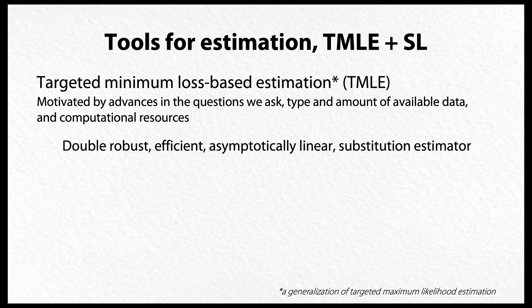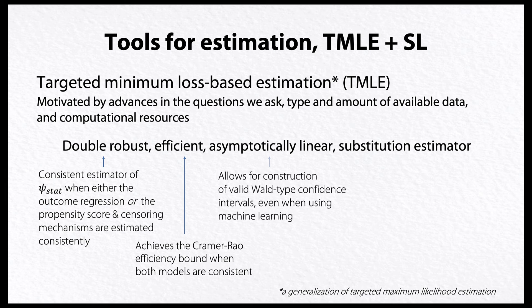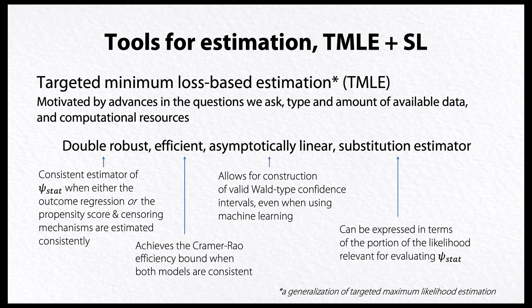Traditional parametric regression modeling cannot adequately address modern-day questions that require the processing of large, disparate sources of data, particularly in high-dimensional settings. Desirable properties of an estimator are that it is double-robust, efficient, asymptotically linear, and is what is known as a substitution estimator. TMLE possesses these properties and is also designed to have good practical performance in finite samples in realistic settings.